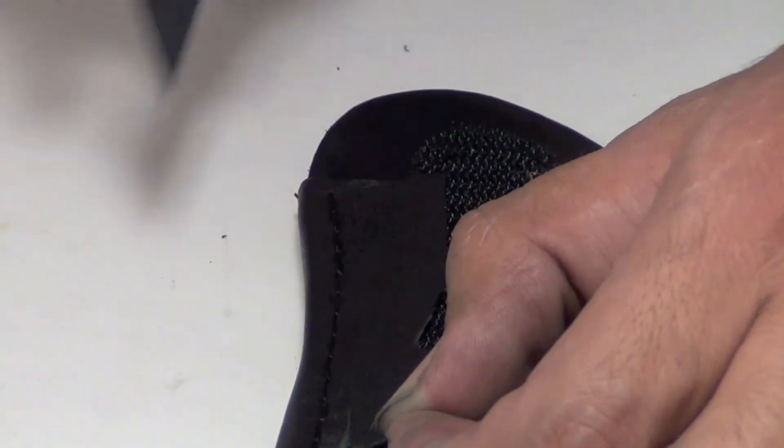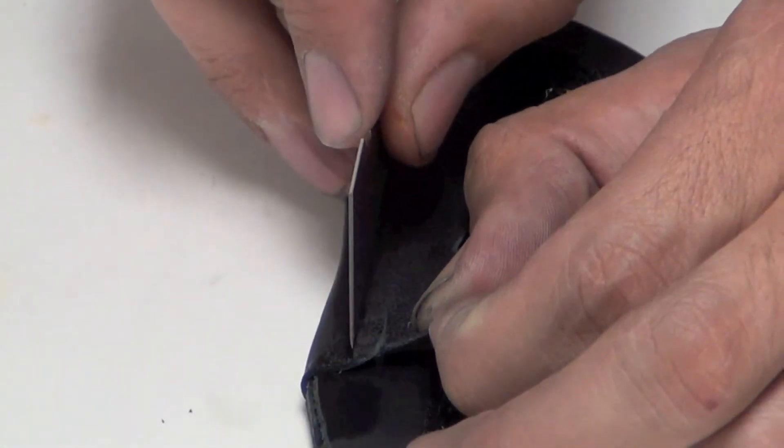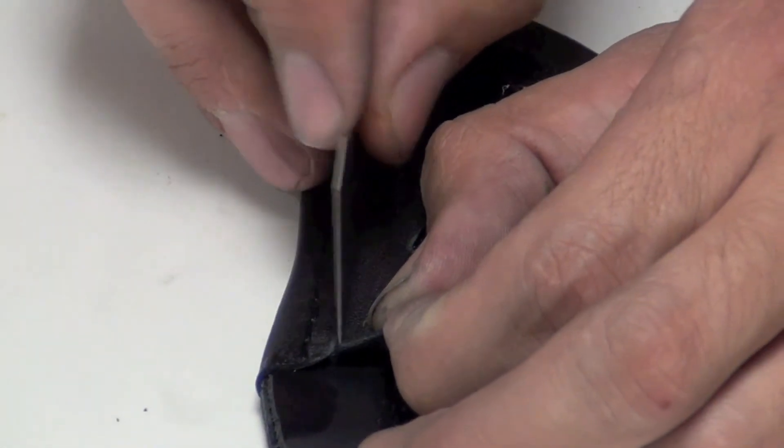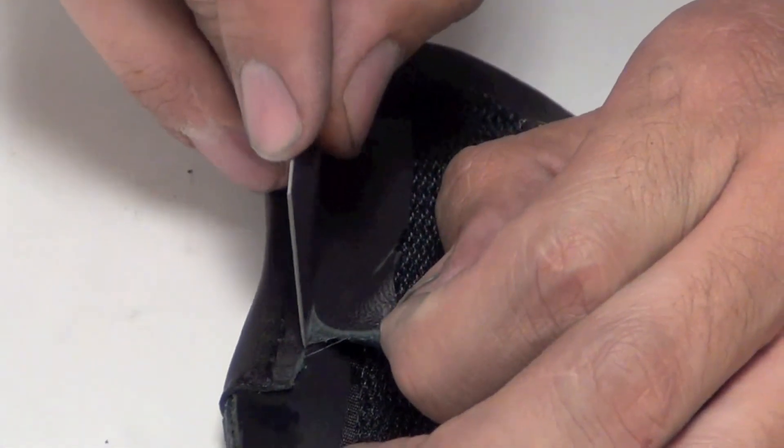And generally, whatever my distance between my stitches and the edge is, I just sort of double that. And so I match the distance coming out here. Just so that it looks even.